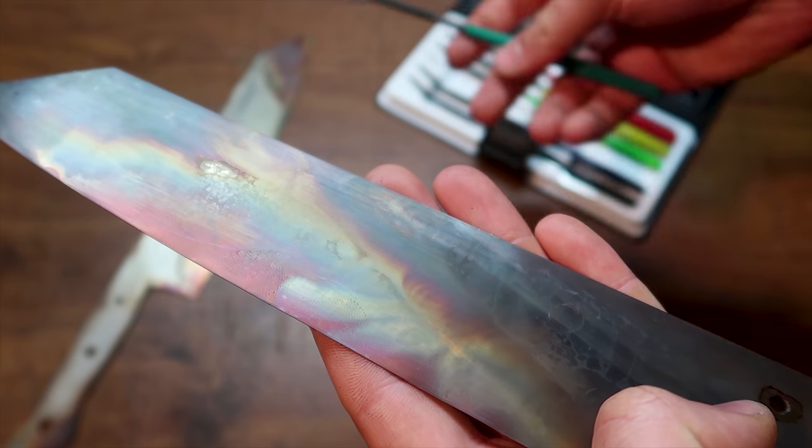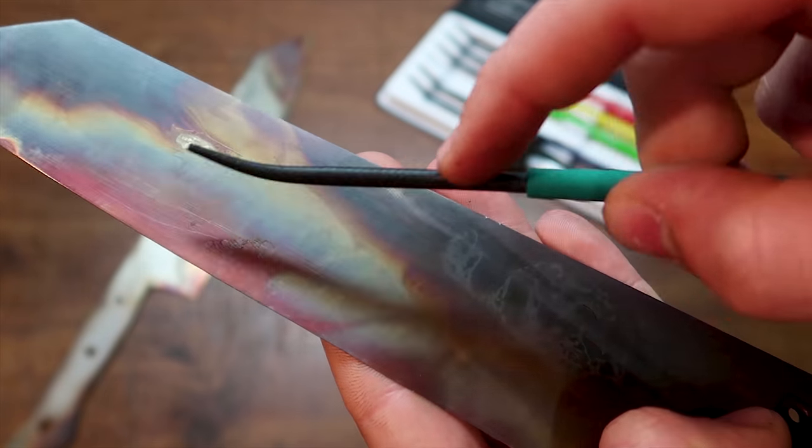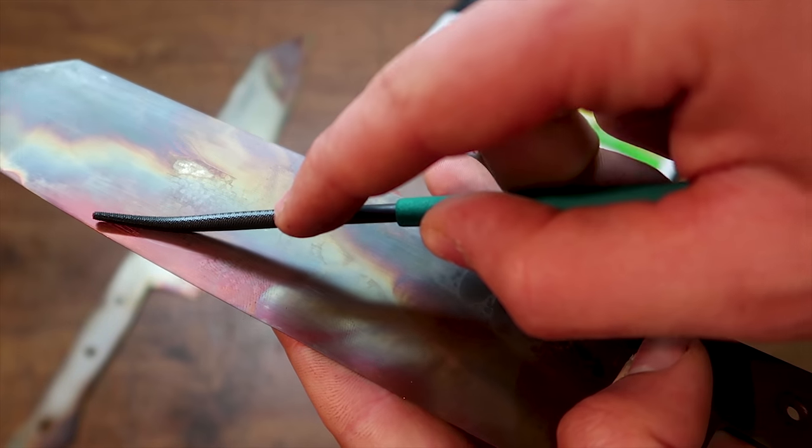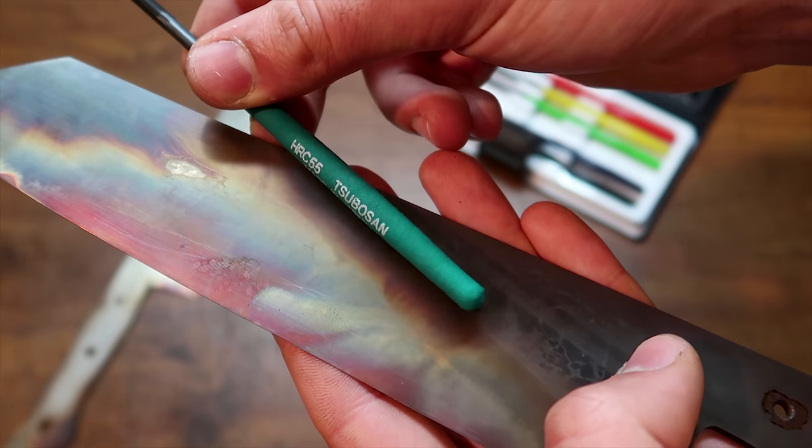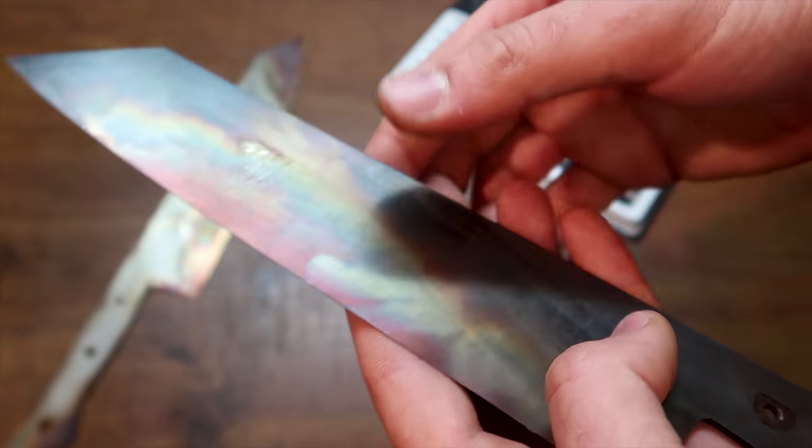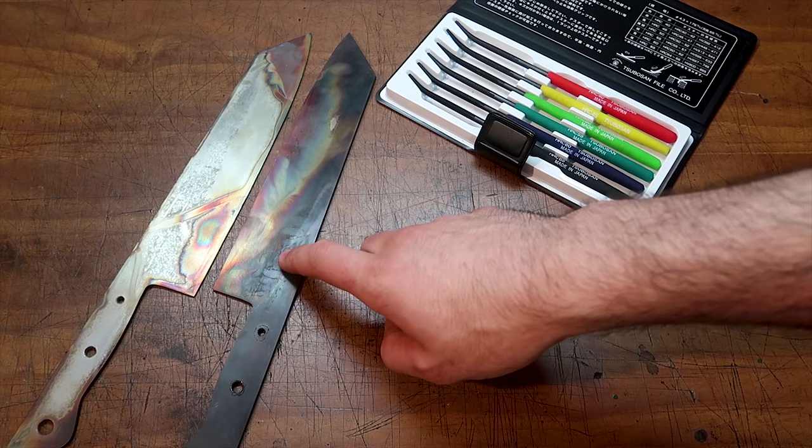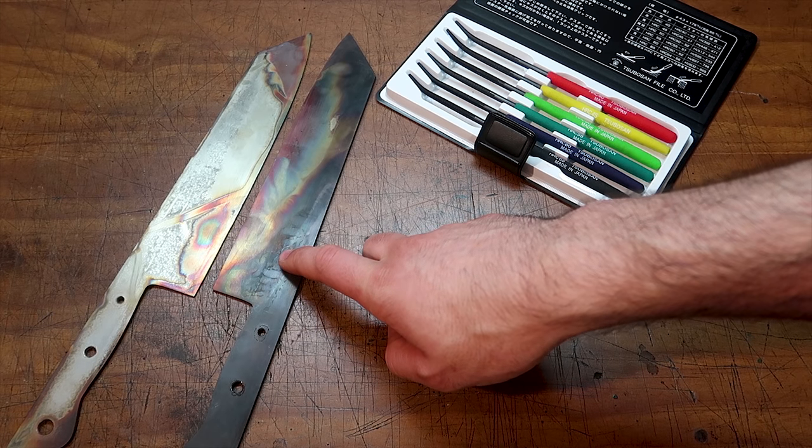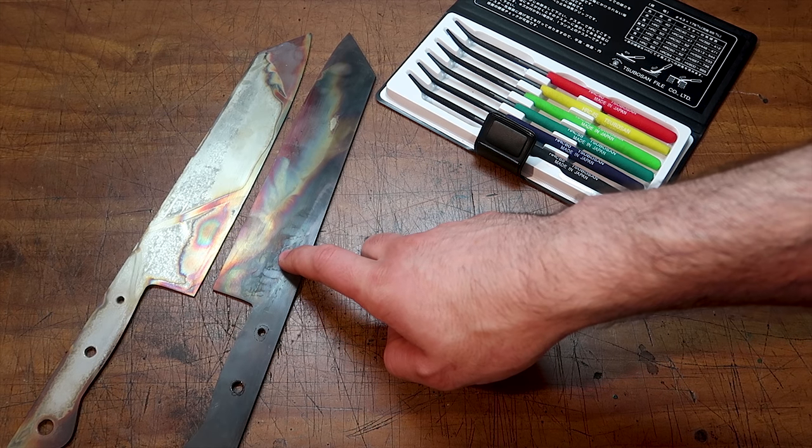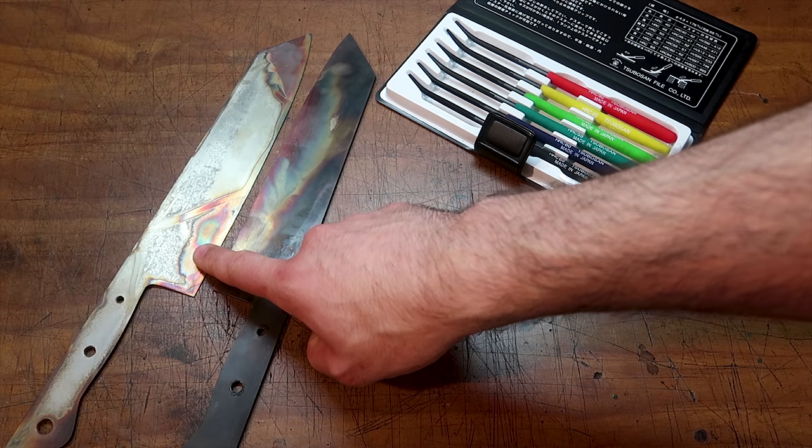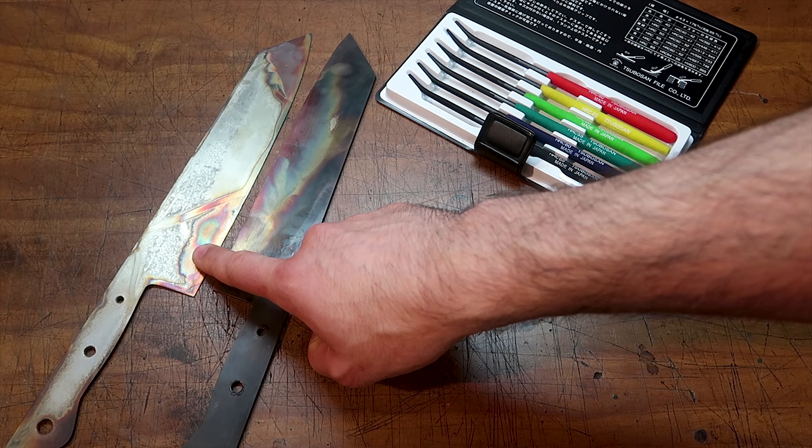Now I'm doing the same exact thing for the oil quenched one, and this one didn't turn out as hard as the other one. The 55 RC file already bites into the steel. To conclude this, we know that the oil quenched one has a hardness between 50 and 55 Rockwell, while the plate quenched one has a hardness between 55 and 60 Rockwell.